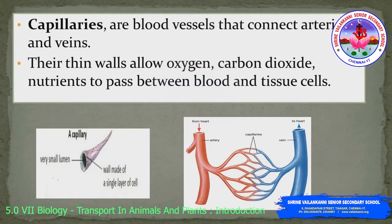The last type of blood vessel is the capillary. Capillaries are blood vessels that connect the arteries and veins. The capillaries have thin walls which allow oxygen, carbon dioxide, and nutrients to pass between the blood and the cells of the tissue.